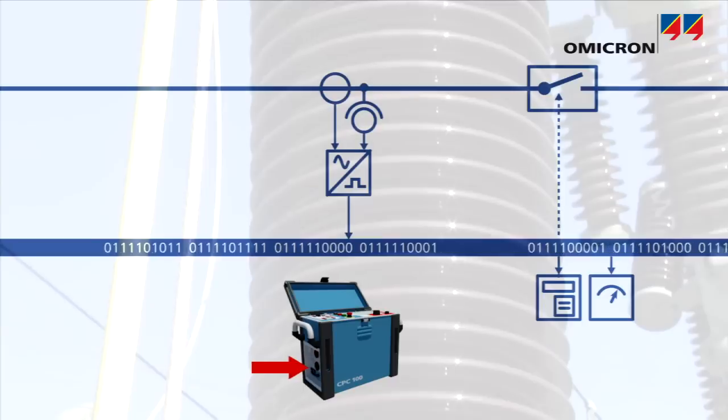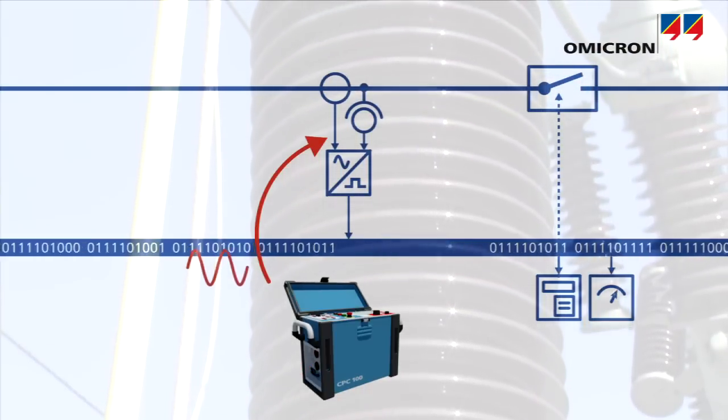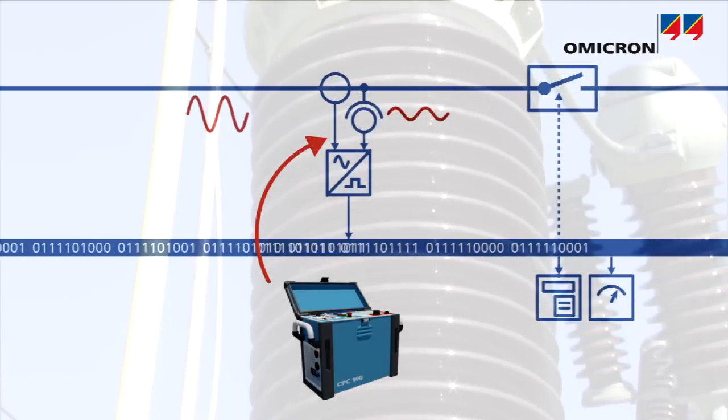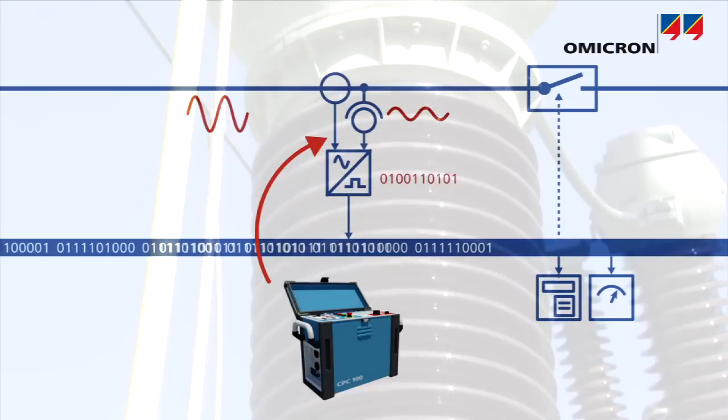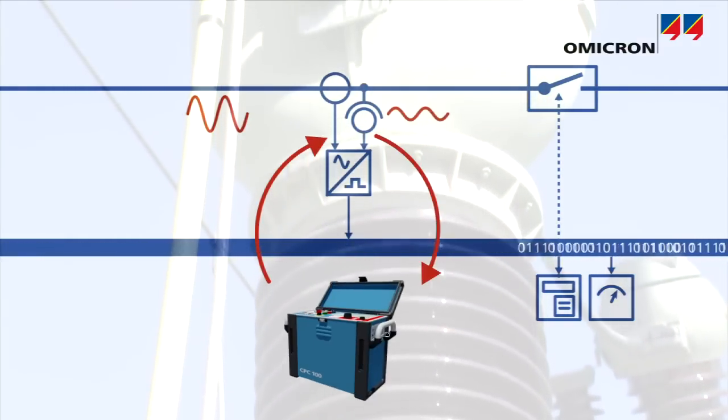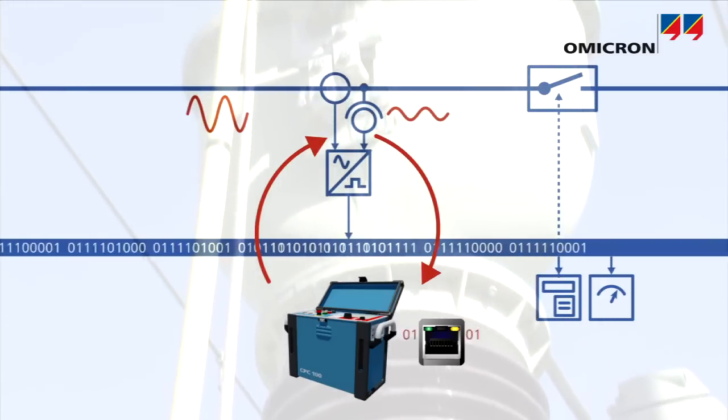The CPC's high voltage and high current outputs are used to apply test voltage or inject test current on the primary side of the CT or VT. The sampled value stream that is generated and published to the network by the merging unit is read back via the CPC's network interface and compared to the injected primary values.